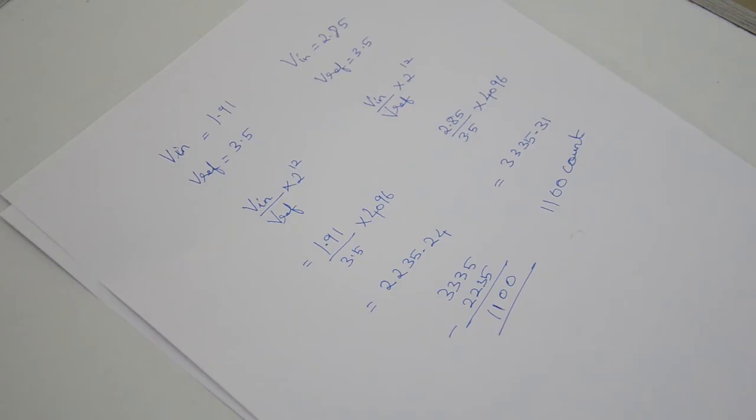On calculating for the count, we get 1100 counts. The count is very less even after calibration. So we go for an external ADC in our project.